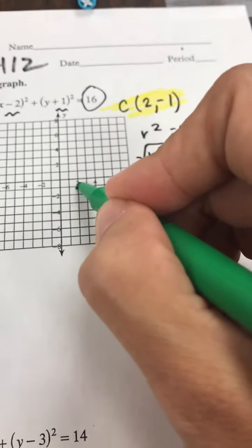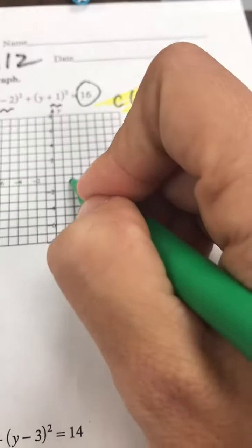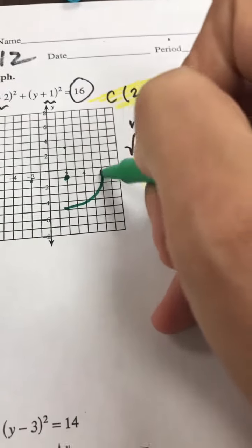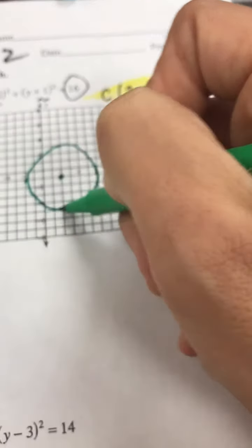2, negative 1, and the radius is 4. So 4 to the left, 4 to the right, 4 up, 4 down. You are Desmos. There's our circle.